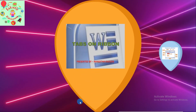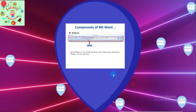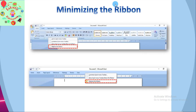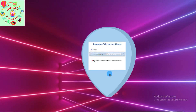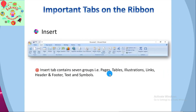Let's take a quick recap. First we glanced at the different components of MS Word. We studied the different tabs on the ribbon and how to minimize and maximize it. The first tab is the Home tab with five groups: Clipboard, Font, Paragraph, Styles, and Editing. The second tab is the Insert tab with seven groups: Pages, Tables, Illustrations, Links, Header and Footer, Text, and Symbols.